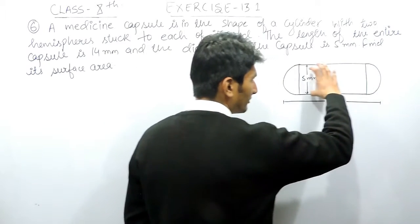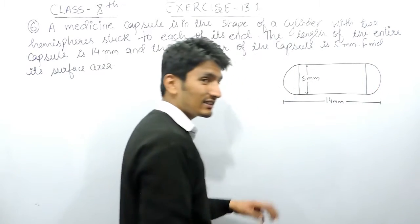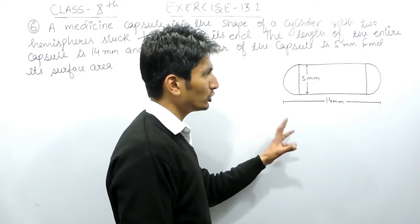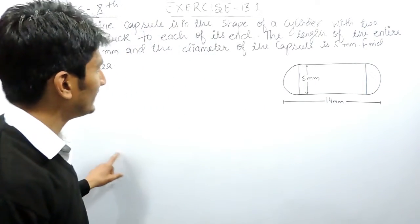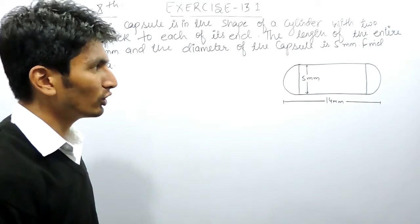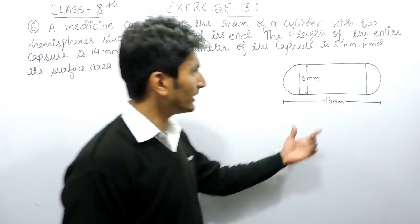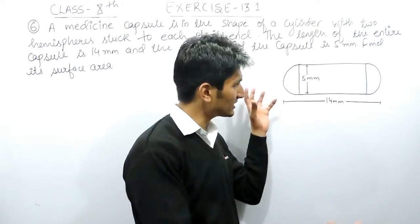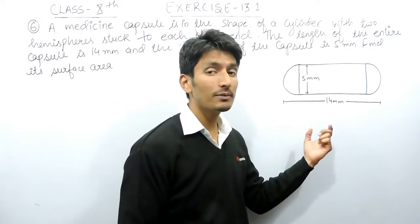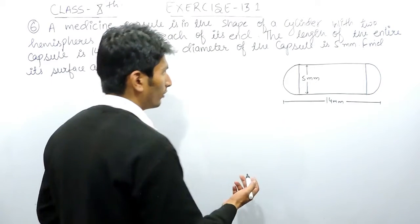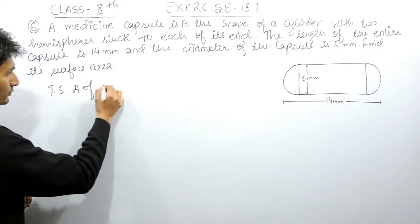This cylinder is stuck with two hemispheres on both ends. Obviously this is a 3D figure, not 2D, so first of all you have to imagine this. Now you have to find the surface area of this capsule. As I have already told you, if you want to find the surface area of anything where two or more surfaces are attached to each other, you need to find the area of that surface which is visible to you.